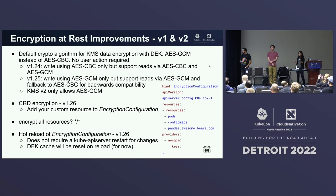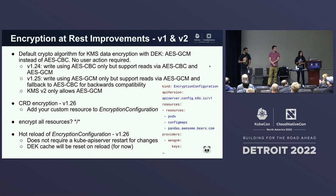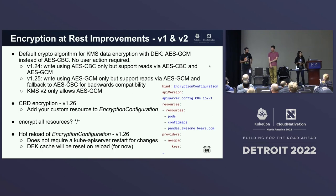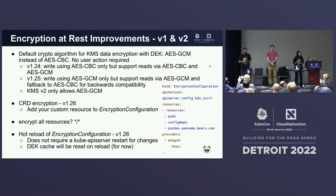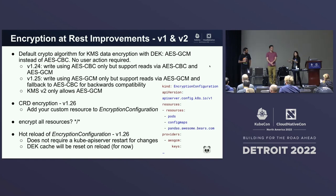We just merged CRD encryption yesterday. Starting in 1.26, you can now encrypt your custom resources — just add your custom resource in the list of resources in your encryption configuration. We also have an issue open about whether the community wants to encrypt all resources by default using a wildcard, which we think should be the default behavior for Kubernetes — secure by default. Please plus-one or let us know if there's interest in making that the default behavior going forward.